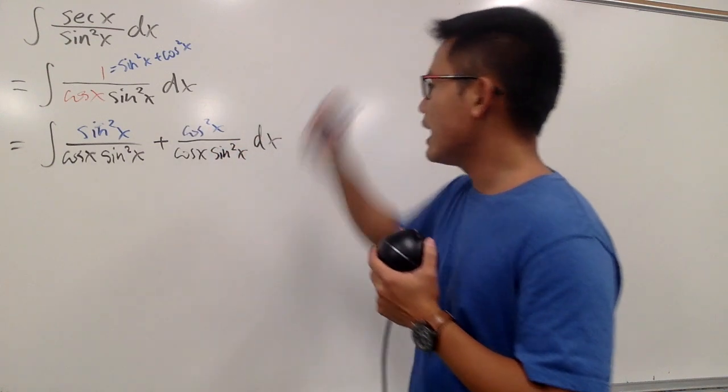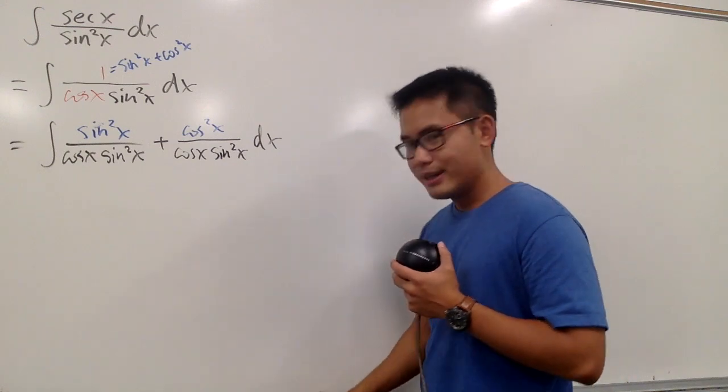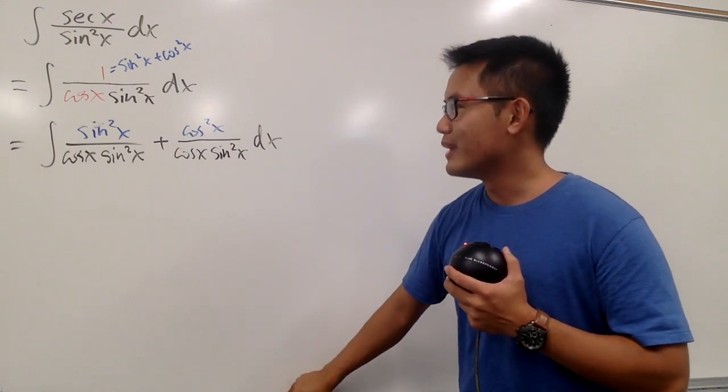And I will add cosine squared x over cosine x times sine squared x. Can I do that? And is this going to help us out? I think so. It's really nice, right?